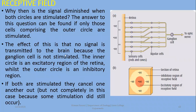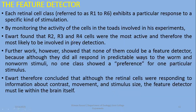So what role do these cells play? Monitoring the activity of the cells involved in the experiment, Everett found that R2, R3, and R4 cells were the most active. Further work showed that none of them could be a feature detector, because although they all responded predictably to worm and non-worm stimuli, no one class showed a preference for one particular stimulus. Everett concluded that the feature detector must lie within the brain itself.